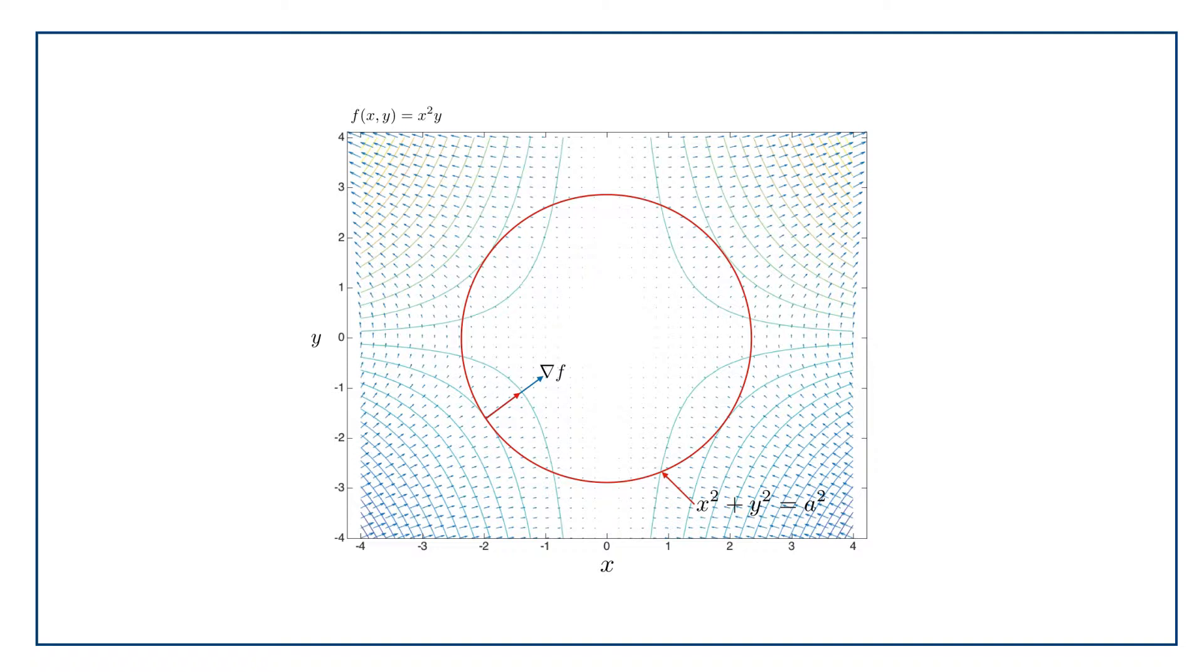And what Lagrange noticed was that when the contour touches the path, then the vector perpendicular to the contour is in the same direction, up to a minus sign, as the vector of the path itself that's perpendicular to the path. If we can find grad perpendicular to the contour on both the path and the function, we're away.